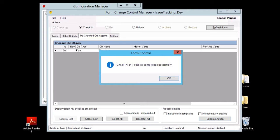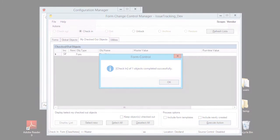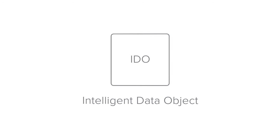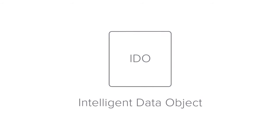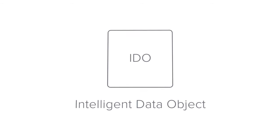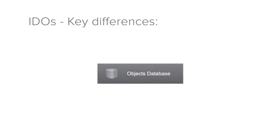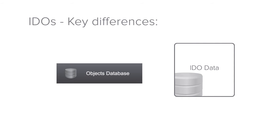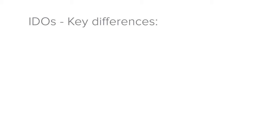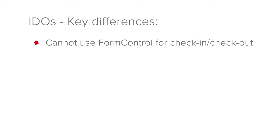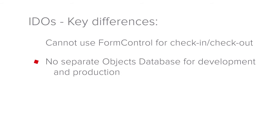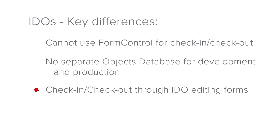As we mentioned earlier, the check-in and check-out of IDO-related metadata works a little differently. We have explained in previous tutorials that Intelligent Data Objects, or IDOs, comprise the majority of the business logic in Mongoose applications. One of the key differences between IDOs and forms is how they are controlled in Mongoose. The IDO-related metadata resides in the objects database and not in the forms database. Because form control works only with forms-related metadata, it has no effect on anything we do with IDO-related metadata, like IDOs, tables, and so on. There is no separate objects database for development and production like there is with forms, meaning that all IDO-related metadata is checked in and out of a single database. Check-in and check-out of IDO-related metadata is done directly from the appropriate IDO-related forms in Mongoose.